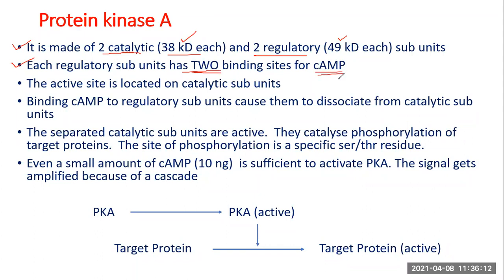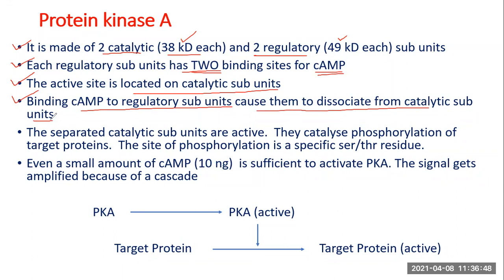Each regulatory subunit has two binding sites for cyclic AMP. Cyclic AMP is a modulator, so its binding sites are different from the catalytic site — they are located on the regulatory subunit. The active site is located on the catalytic subunit. The binding of cyclic AMP to regulatory subunits causes them to dissociate from the catalytic subunits, producing a conformational change.